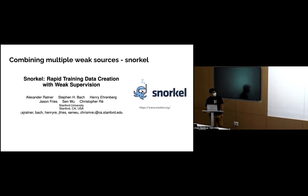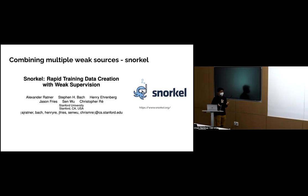Those are some methods: using models or heuristic hacks to get labels. You can also include crowdsourcing, since human annotators aren't right 100% of the time. All of these can be grouped as weak sources of data, and you want a way to combine these different sources into less noisy labels.